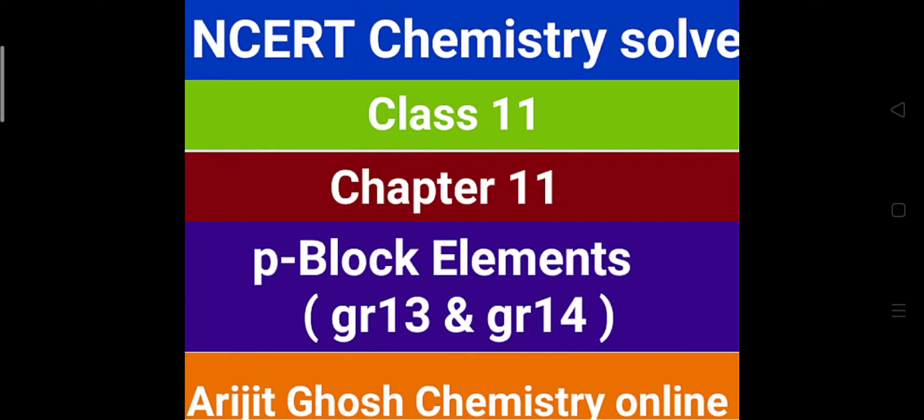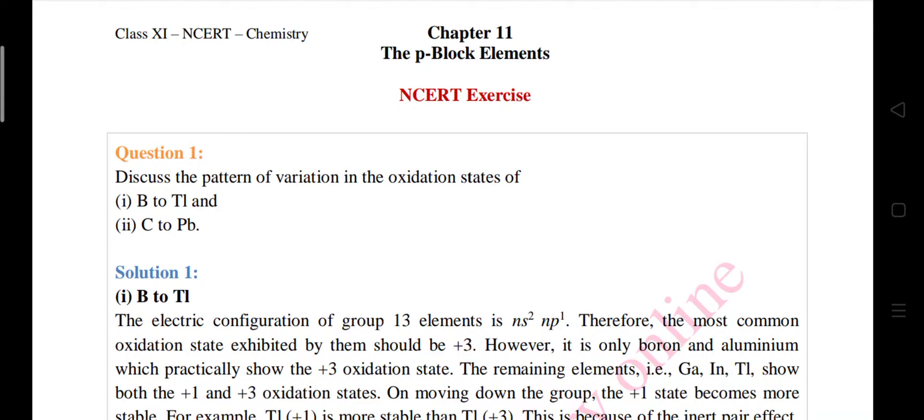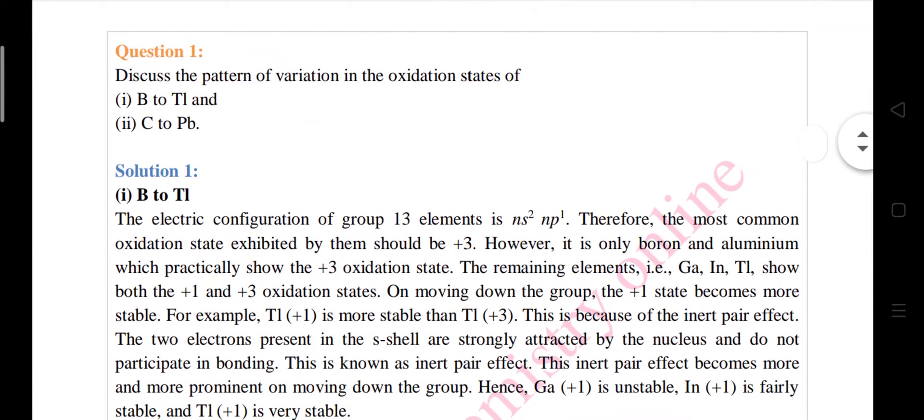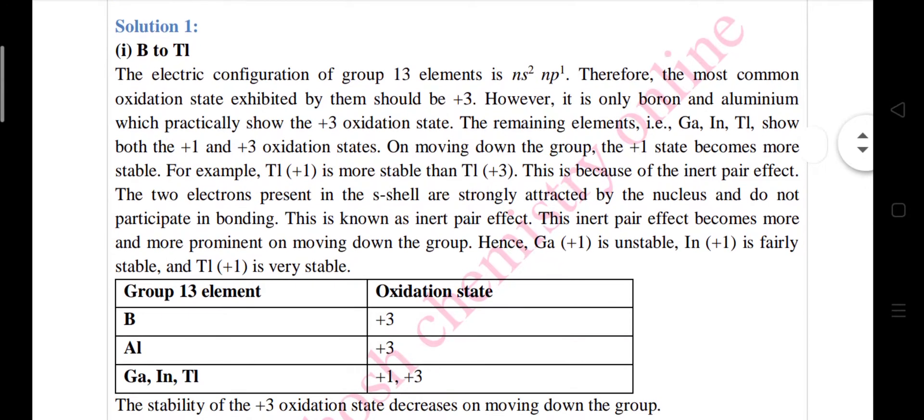Let's start. So students, let's begin with NCERT exercise question number one: Discuss the pattern of variation of oxidation state of boron to thallium and carbon to lead. Now see the solution.